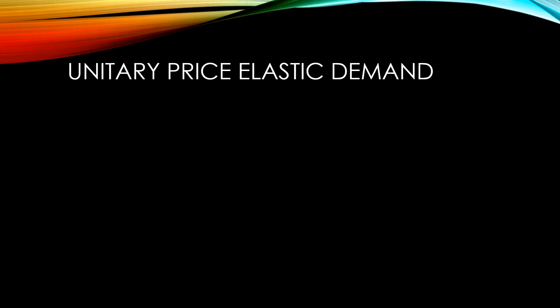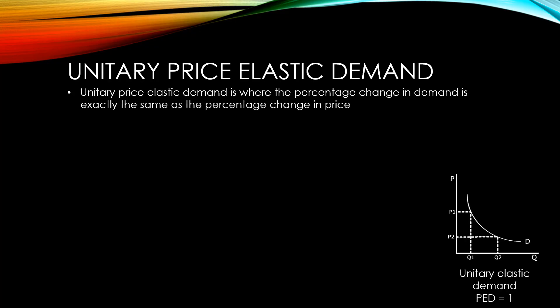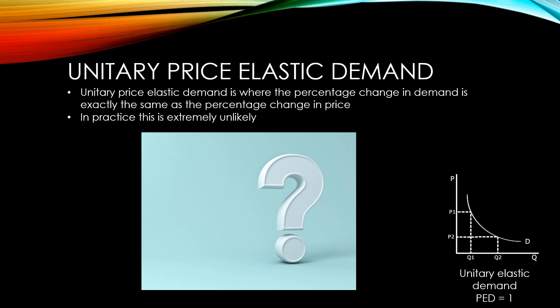Unitary price elastic demand is where the percentage change in quantity demanded is exactly the same as the percentage change in price. You may be surprised to note that it looks like a quarter of a circle, but this is the correct graph for unitary elastic demand, which has a PED of exactly 1. In practice, unitary price elastic demand is extremely unlikely.